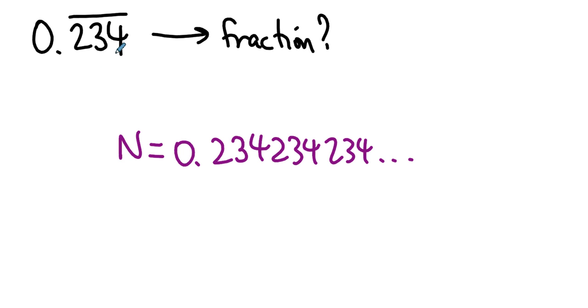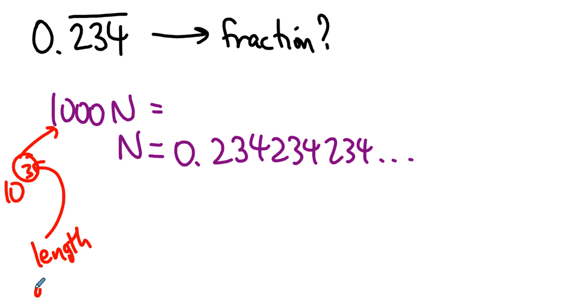Well, what if we multiplied both sides of this equation by 10 to the three, three for the digits that repeat, 10 to the three, that's 1000. I'll make that note 10 to the three, where three is the length of the repetend.